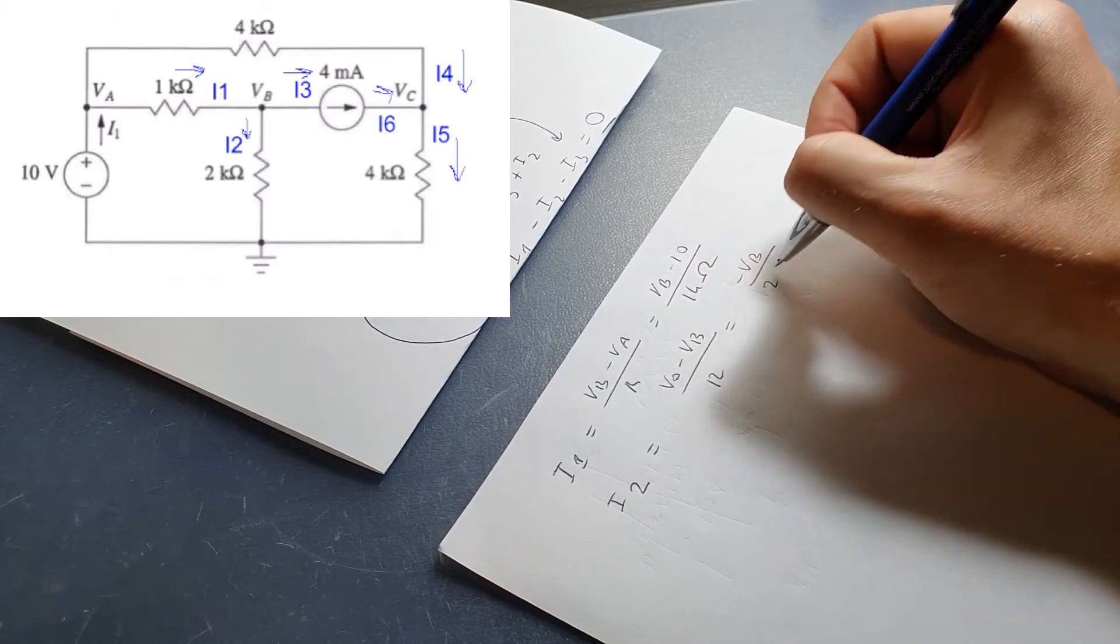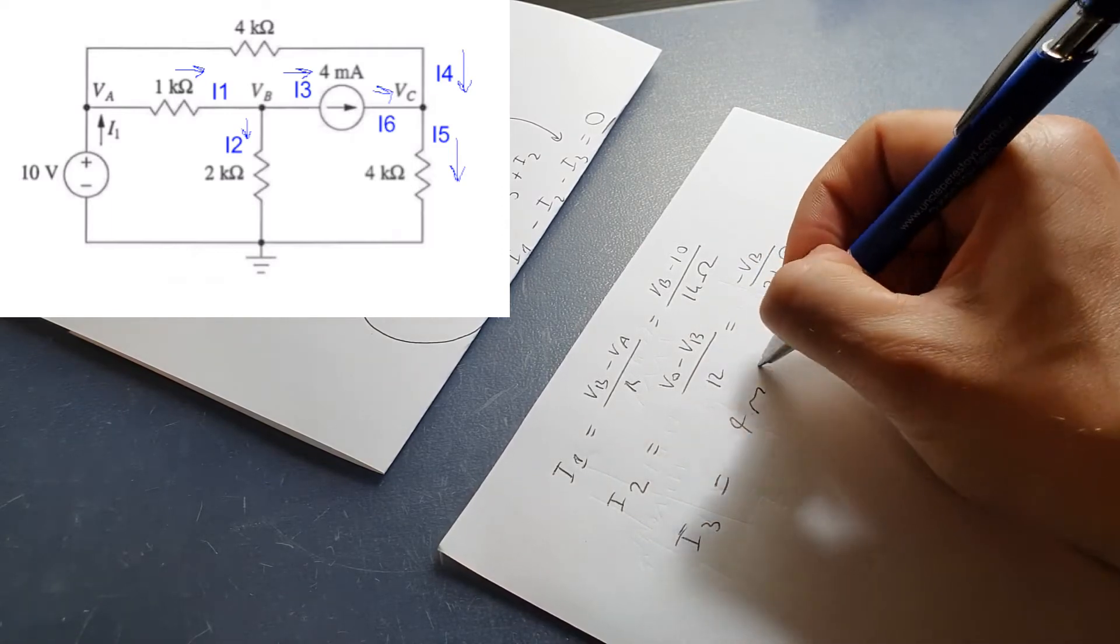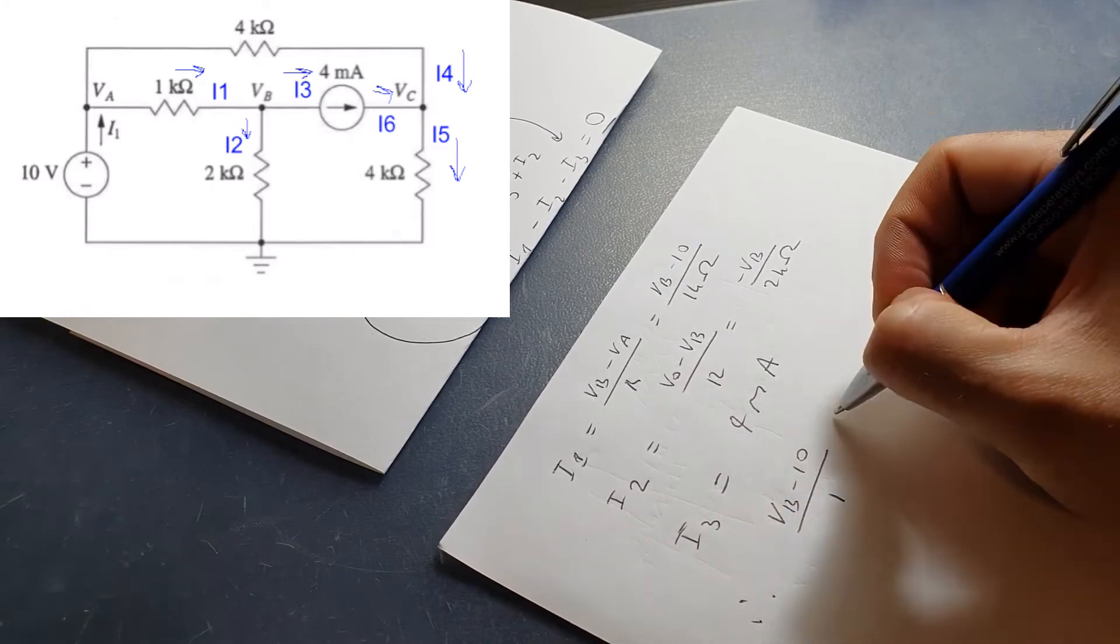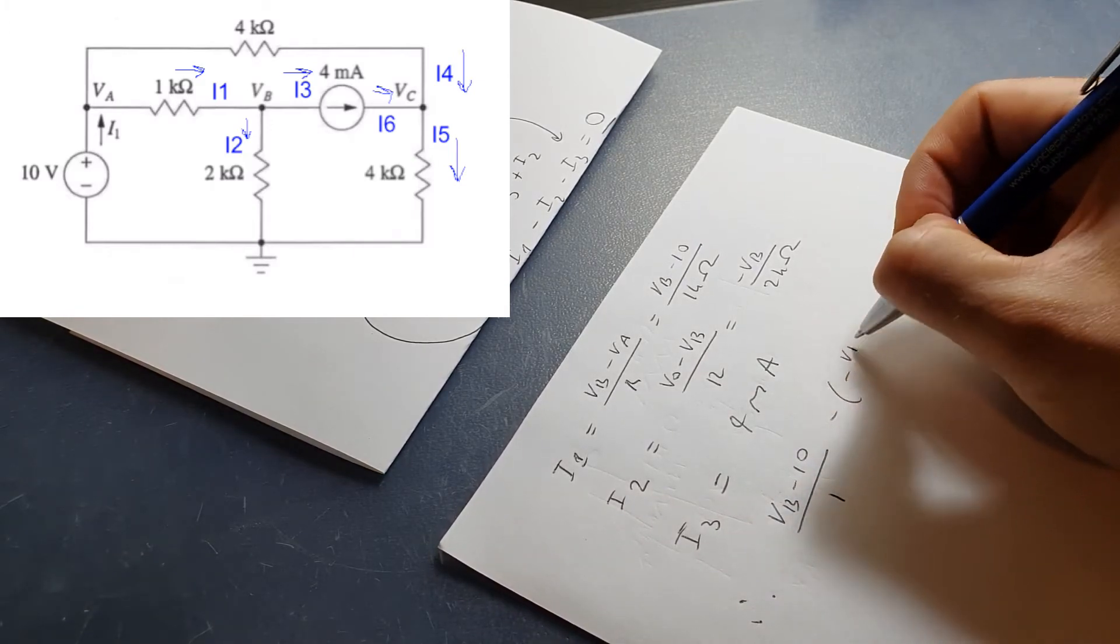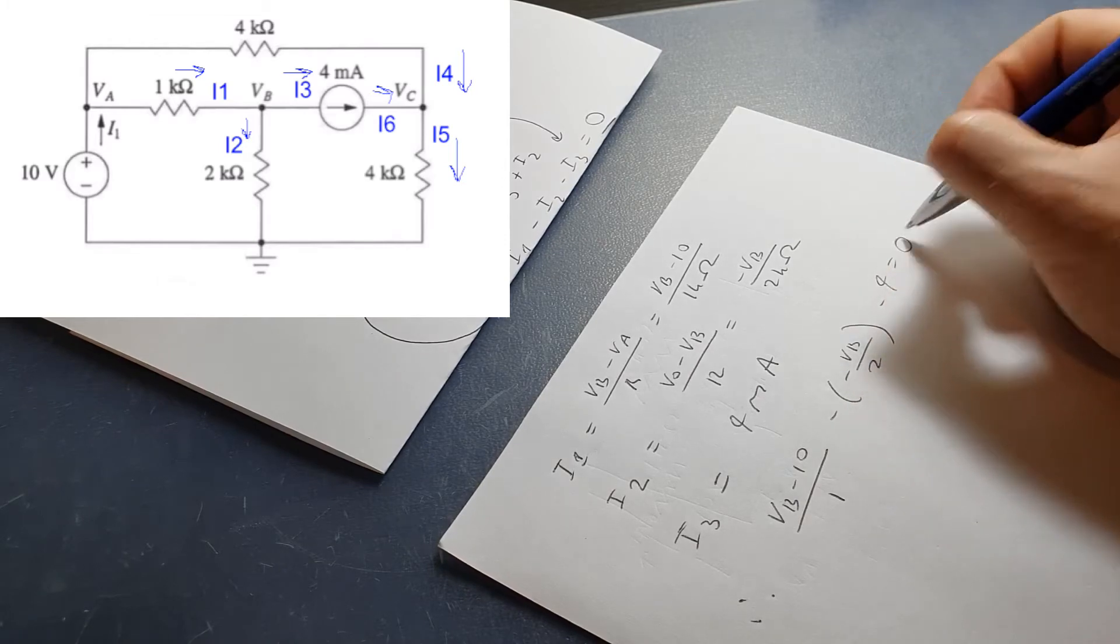Fantastic! V0, being the ground, is a reference node, so therefore we can set everything on that side to zero. We also know I3 is 4 milliamps because it's connected right to a current source. Now we substitute in our three values for I into our master equation, and we can solve in terms of VB.